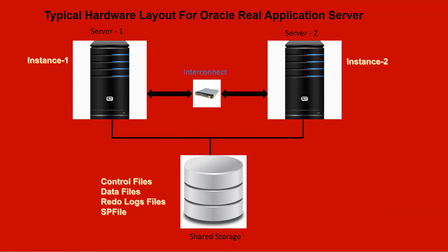This is the typical Oracle layout for Oracle Real Application Clusters. We need two servers — Server 1 and Server 2 — connected by one very fast interconnect. One shared storage is connected to each server. Each server has its own instance: Server 1 has Instance 1 and Server 2 has Instance 2. The shared storage holds the control file, data file, redo log file, and SP file for the database.